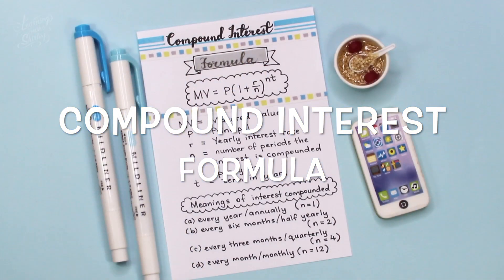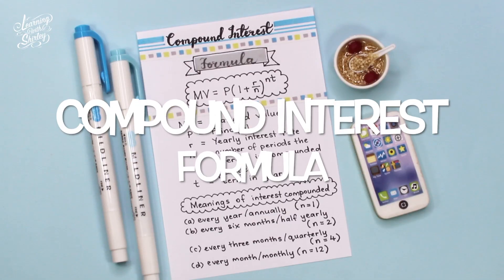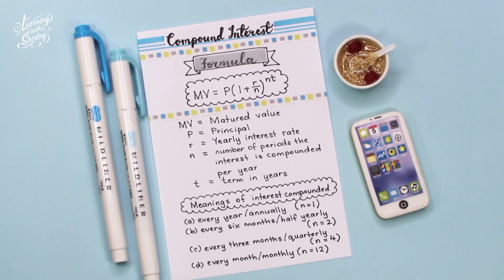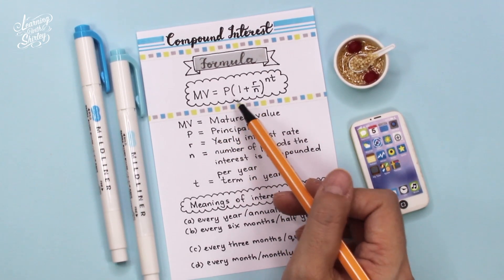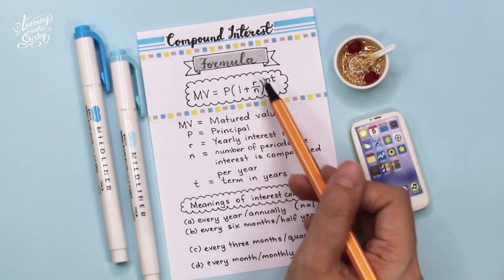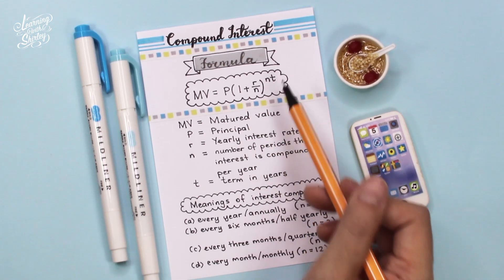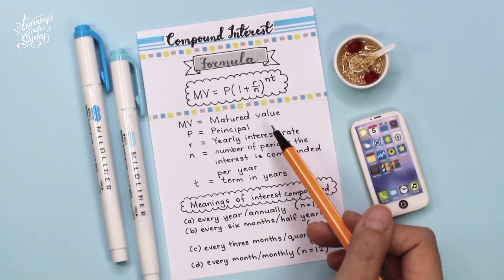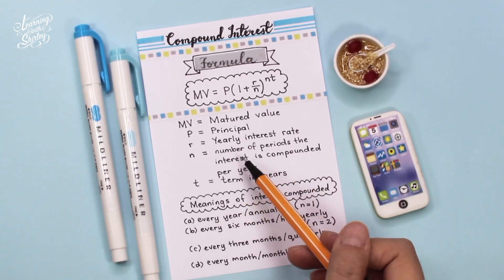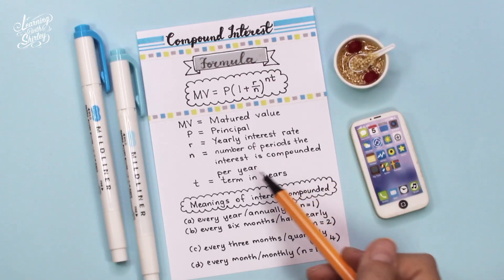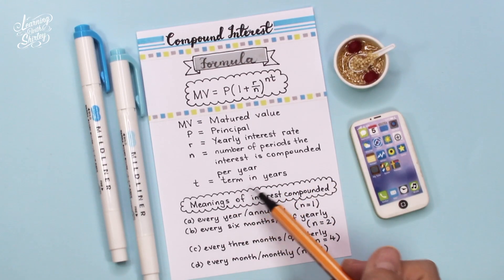Let's take a look at the first question. Before we attempt the questions on compound interest, let's look at the formula first. The formula to calculate compound interest is: MV equals P bracket 1 plus R over N, whole thing to the power NT. MV stands for matured value, P stands for principal, R stands for yearly interest rate, N stands for number of periods the interest is compounded per year, and T stands for term in years.